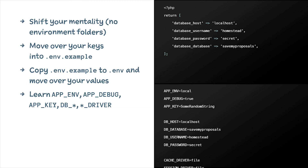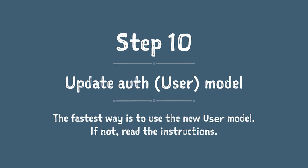Step nine: move any loose files back in — Readme.md, Travis.yaml, scrutinizer.yaml, bring them all back. Step ten: if you're using Laravel authentication, the easiest way is to take the new one and bring in any customizations you've made. If you need more detail, there's a list of namespace and import changes in the upgrade documentation that walks through it step by step.